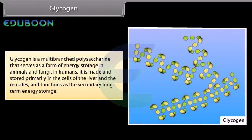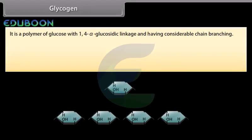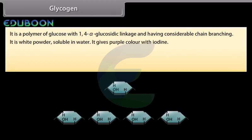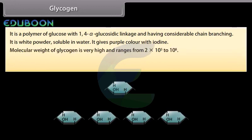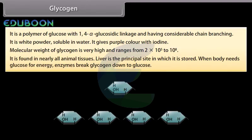Glycogen is a multi-branched polysaccharide that serves as a form of energy storage in animals and fungi. In humans, it is made and stored primarily in the cells of the liver and muscles, and functions as the secondary long-term energy storage. It is a polymer of glucose with 1,4-alpha-glucosidic linkage and considerable chain branching. It is a white powder, soluble in water, and gives a purple color with iodine. The molecular weight of glycogen ranges from 2×10^5 to 10^8. It is found in nearly all animal tissues. When the body needs glucose for energy, enzymes break glycogen down to glucose.